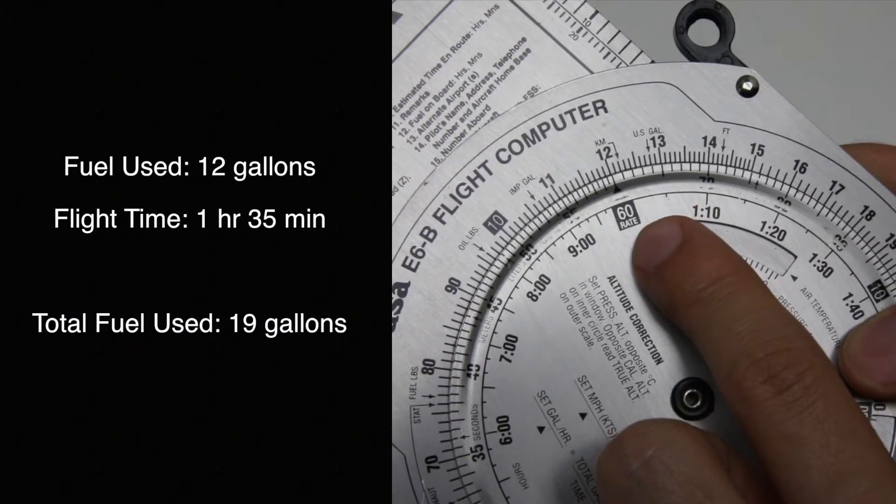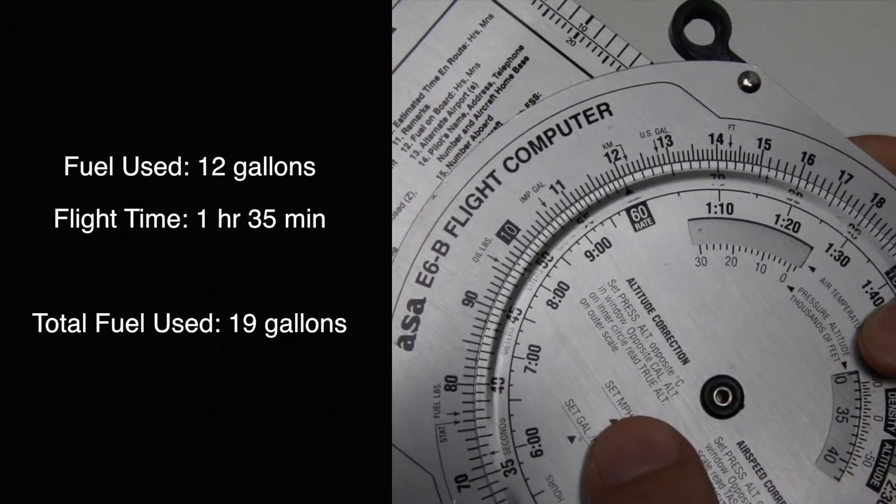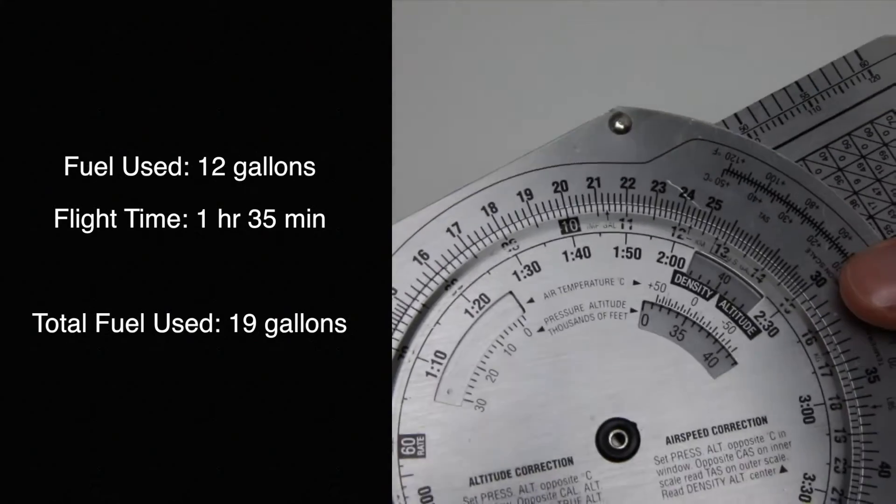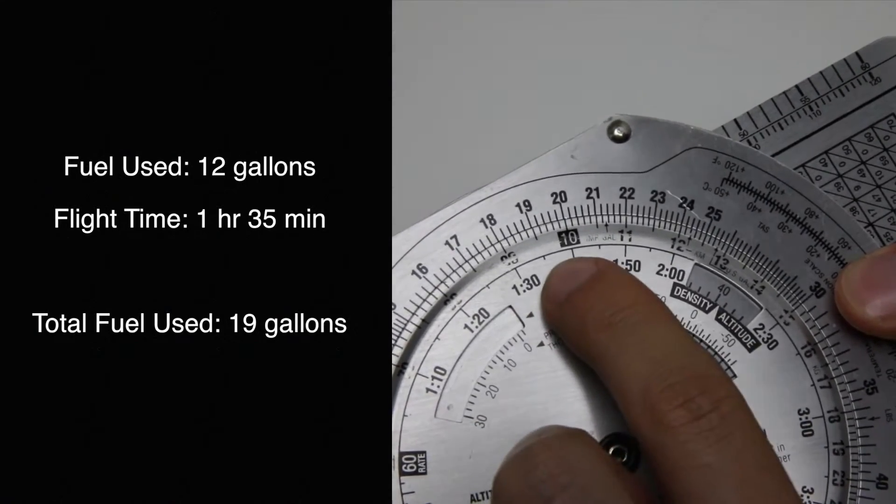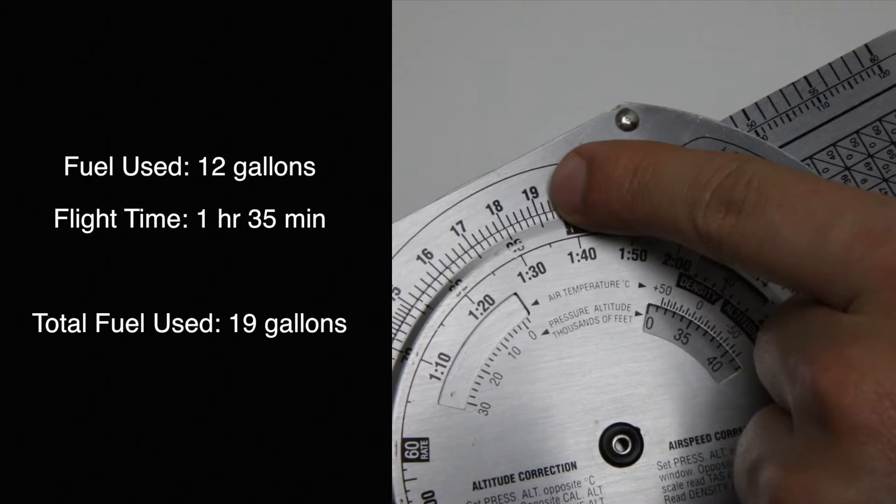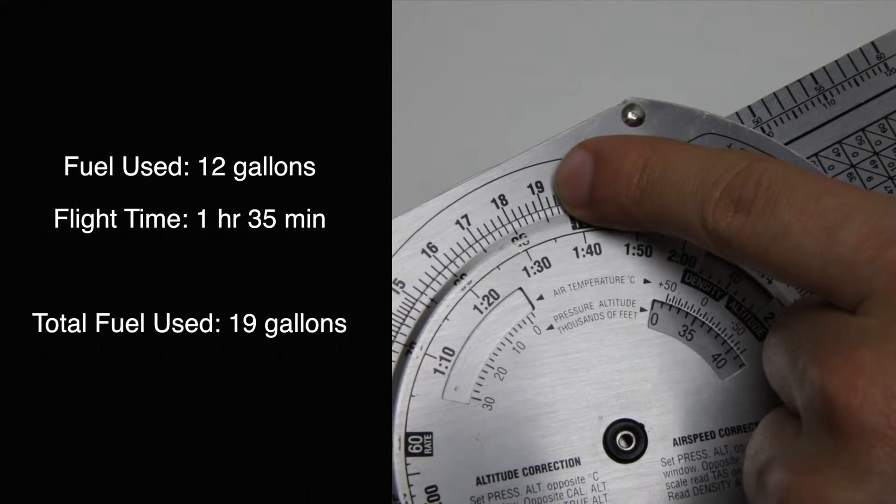At 60 minutes, we're going for a time of 1 hour and 35 minutes, so we go to 1 hour 35 minutes and we read right on top on the outer scale. We're going to see that our gallons burned is going to be 19 gallons.